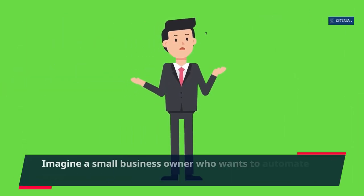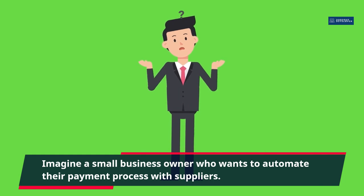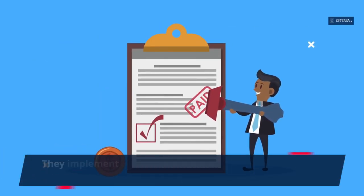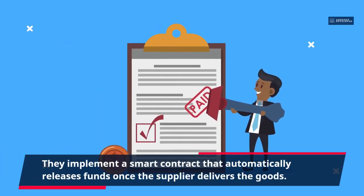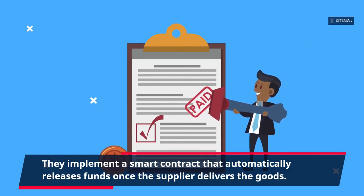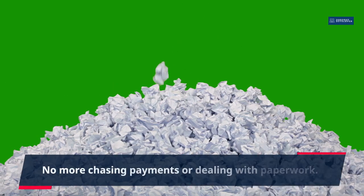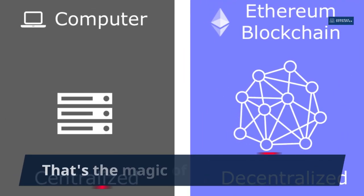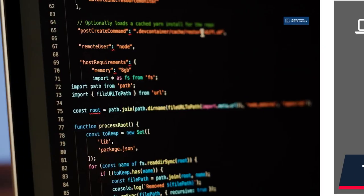Imagine a small business owner who wants to automate their payment process with suppliers. They implement a smart contract that automatically releases funds once the supplier delivers the goods — no more chasing payments or dealing with paperwork. That's the magic of smart contracts.